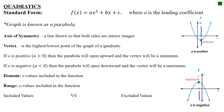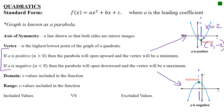For example, if the ordered pair at the vertex is (2, −2), the axis of symmetry is the line x = 2. There's a way to know whether your parabola opens up or down without graphing it. If a is positive (a > 0), the parabola opens up and the vertex is a minimum. If a is negative (a < 0), the parabola opens down and the vertex is a maximum.